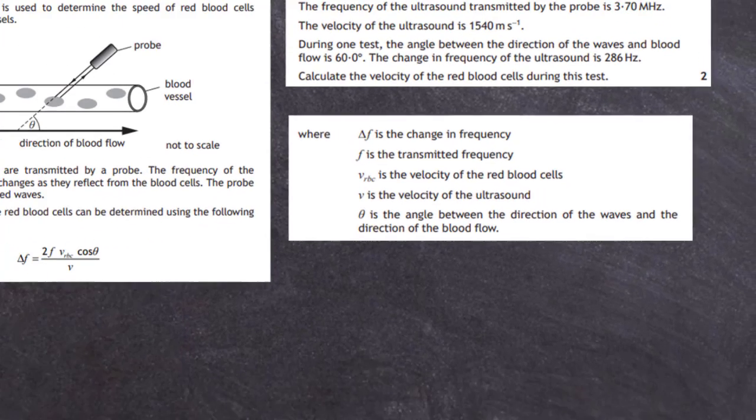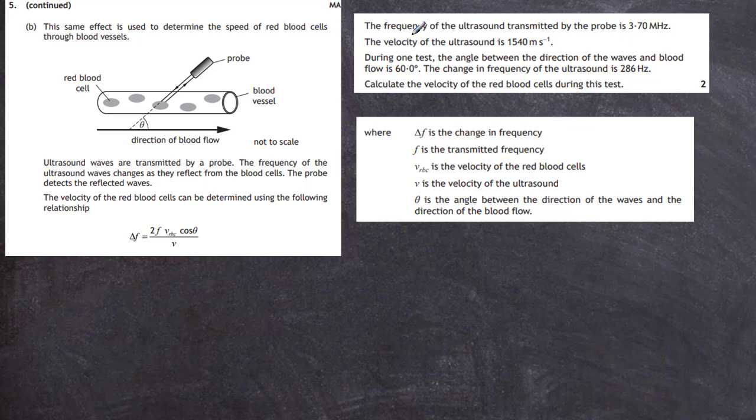Before you start, put in all the data. Delta F, the change in frequency, is 286 hertz. F, the transmitted frequency, is 3.70 megahertz which is 3.70 times 10 to the power 6 hertz. V_RBC is what we are after. V, the velocity of the ultrasound, is 1540 meters per second. Theta is the angle, 60 degrees. Now I need to rearrange this equation in terms of V_RBC.